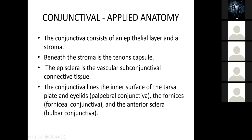The conjunctiva lines the inner surface of the tarsal plates and eyelids — that's what we call the palpebral conjunctiva. The other name of the eyelids is palpebra. Where the conjunctiva folds over in the corners of the eyelid, there's a fornix — you have the fornical conjunctiva. And where it falls onto the eyeball itself, we call it the bulbar conjunctiva.